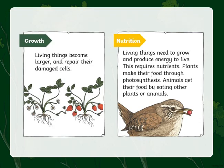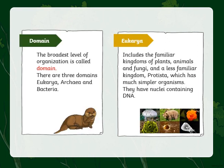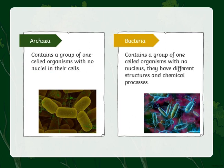For this week, we are going to talk about their growth and their nutrition, and their domain. We divided the domain into Eukaryota, which is the kingdom of plants, animals, and fungi, and the familiar kingdom Protista.